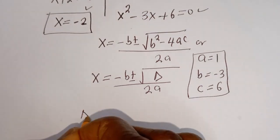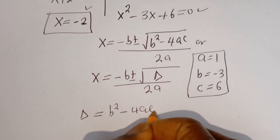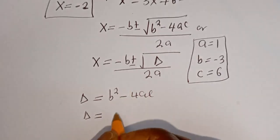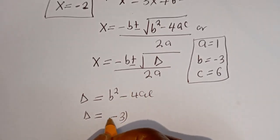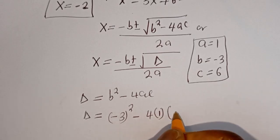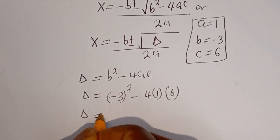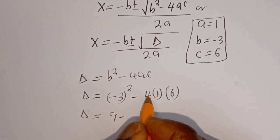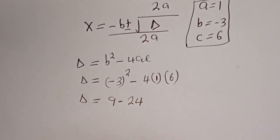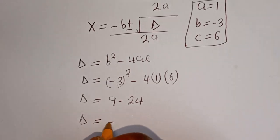Then D, the discriminant, is equal to b squared minus 4ac. The discriminant D is equal to b squared, that is minus 3 squared, minus 4 multiplied by a which is 1, multiplied by c which is 6. Then D is equal to 9 minus 24, that is minus 15.